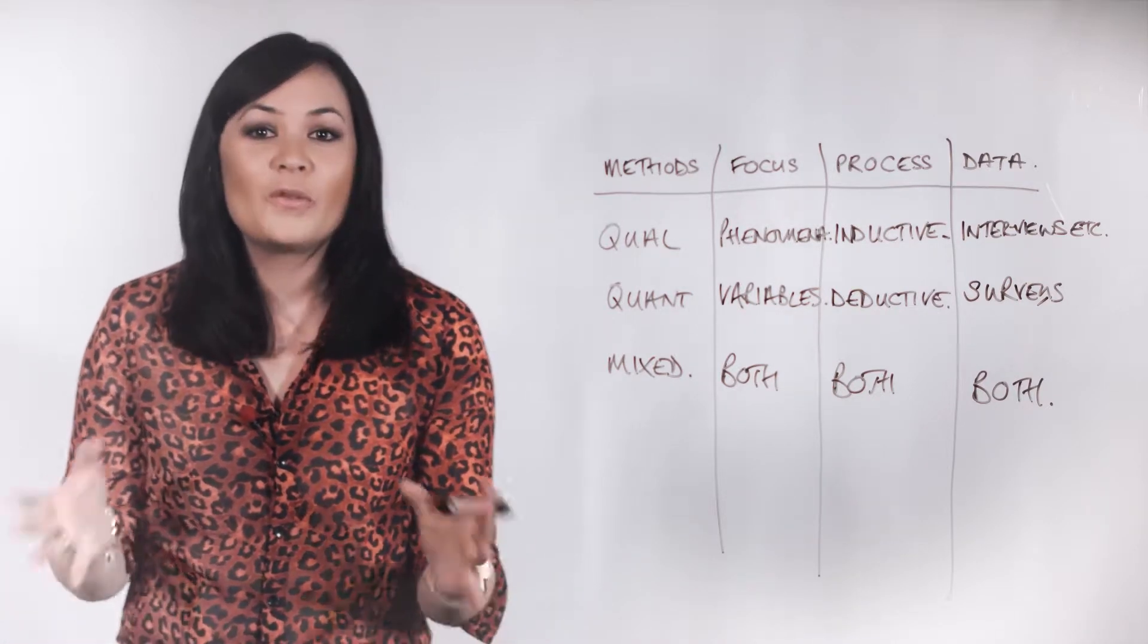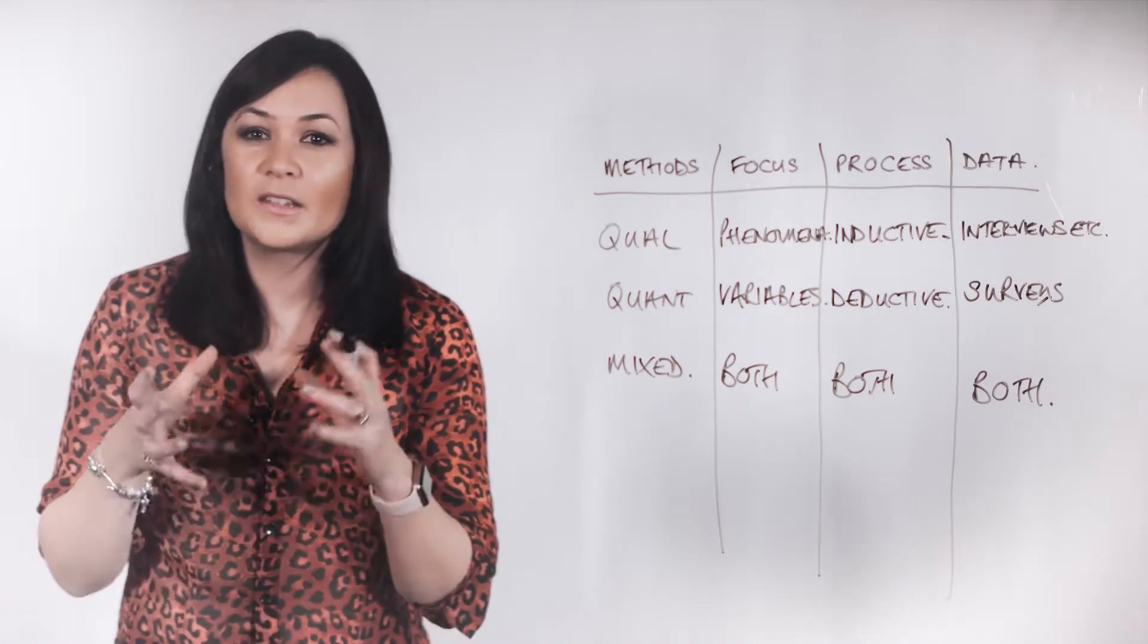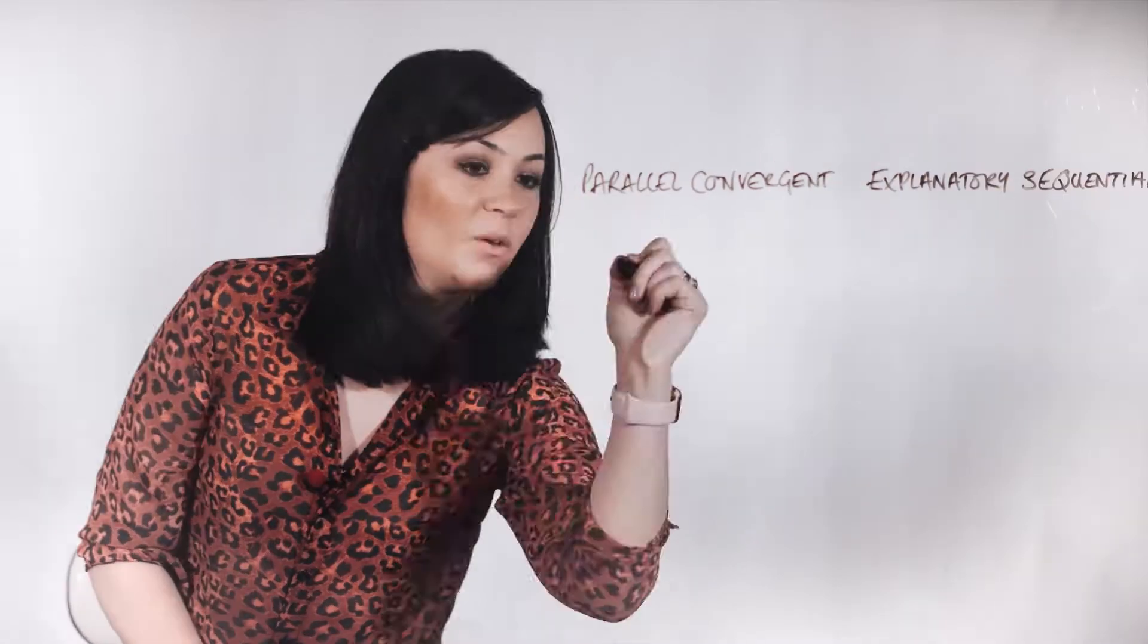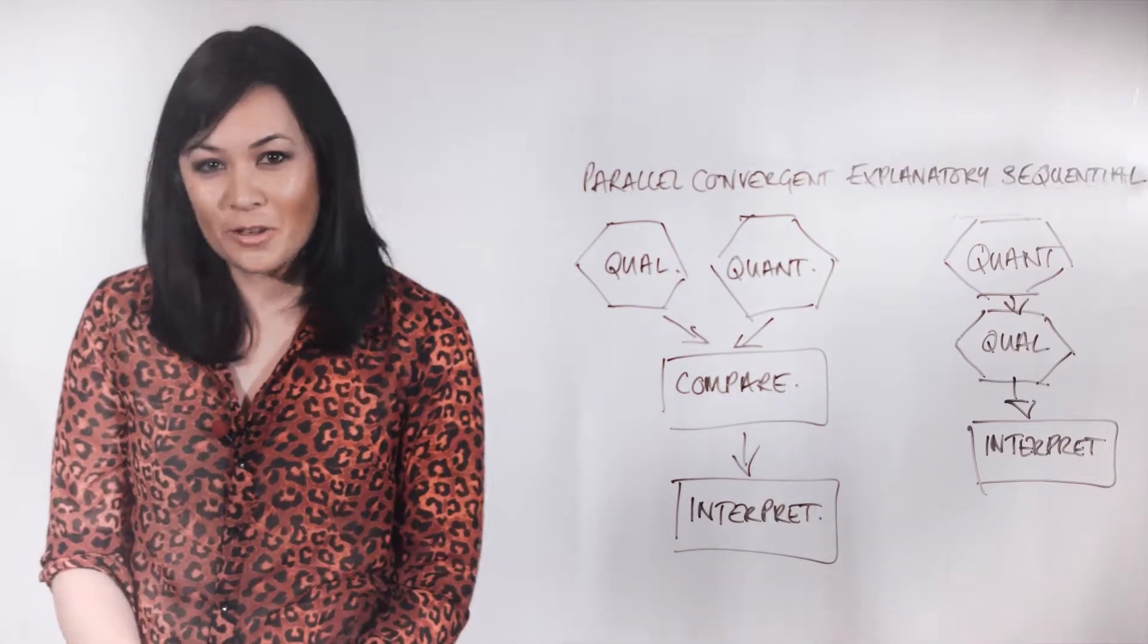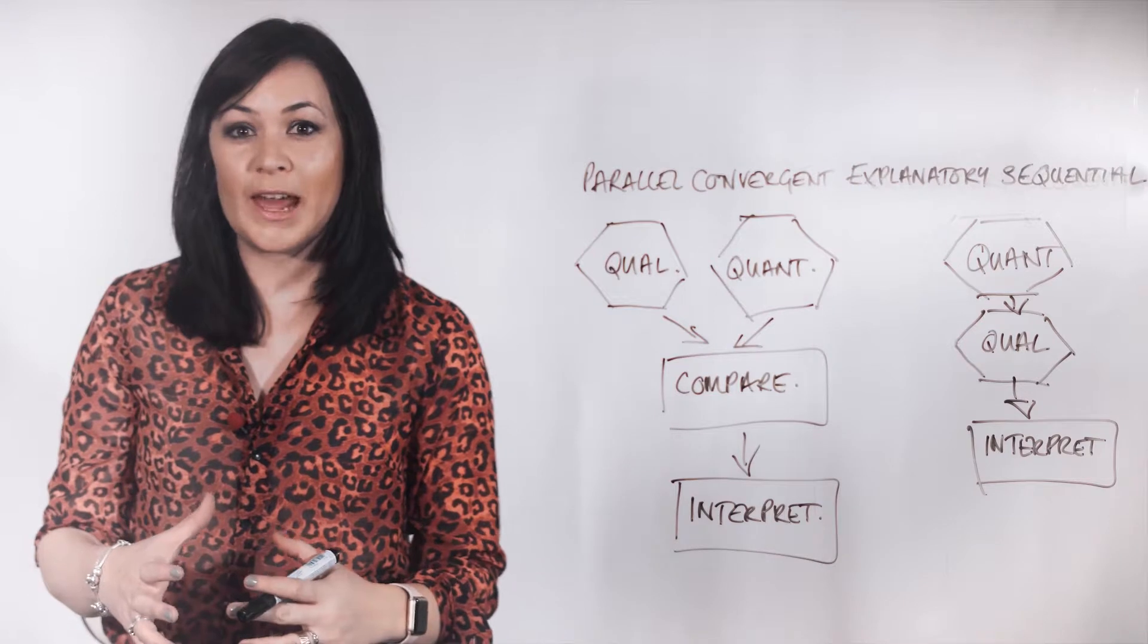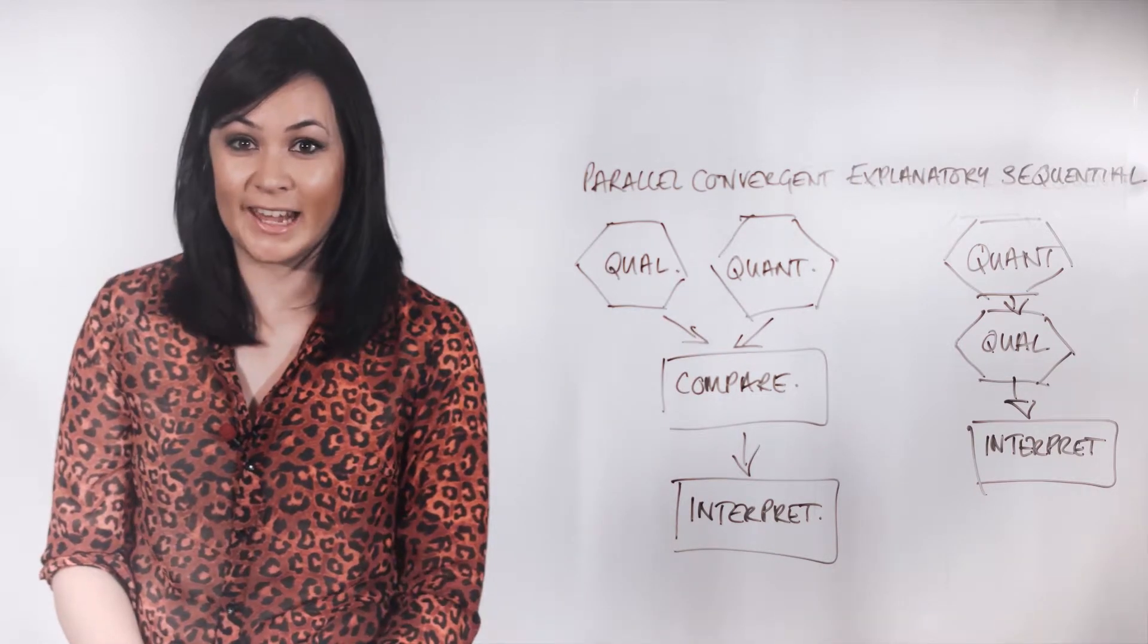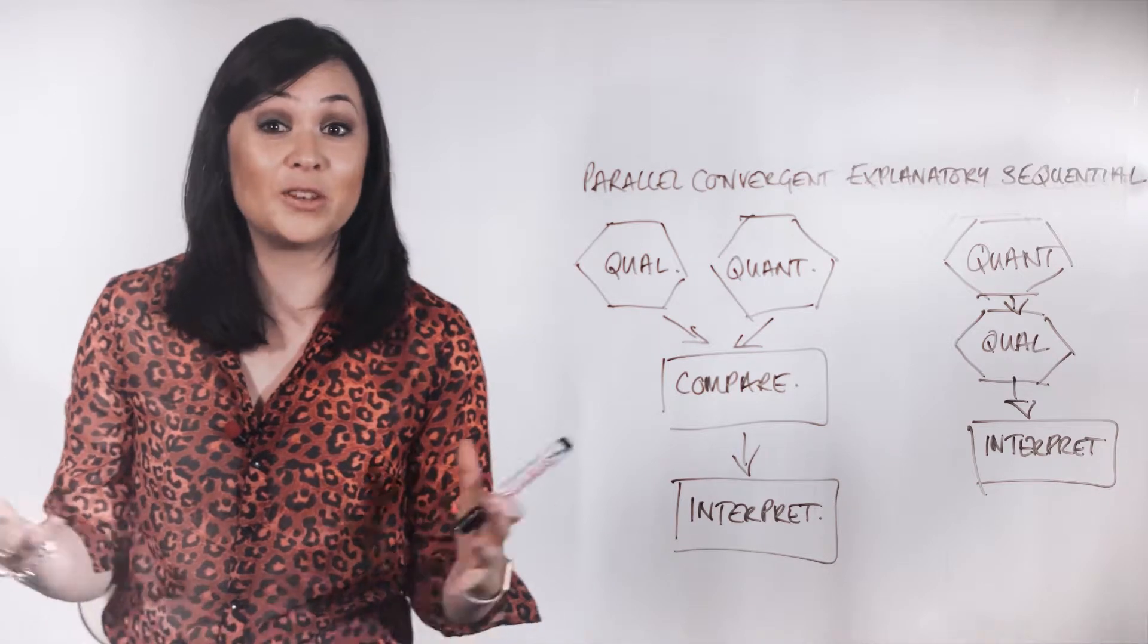Within mixed methods, there are two central designs that determine how the qualitative and quantitative arms of the study fit together. Parallel convergence studies are those where you collect your qualitative and quantitative data independently, and at the same time in your study.